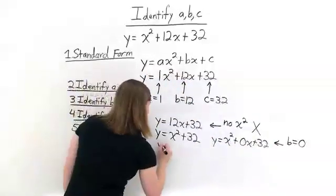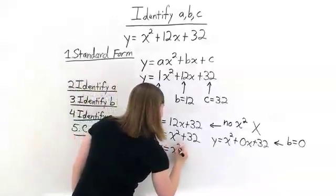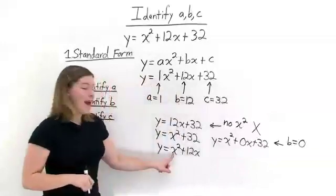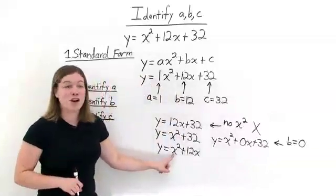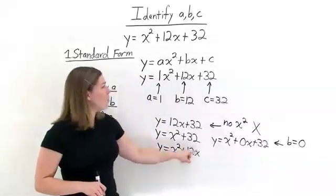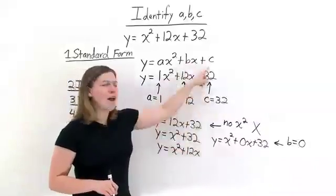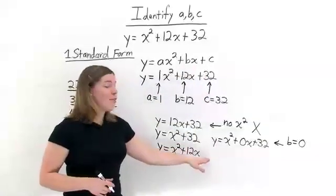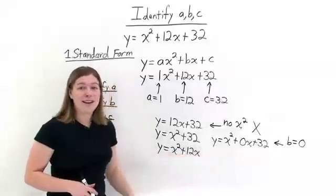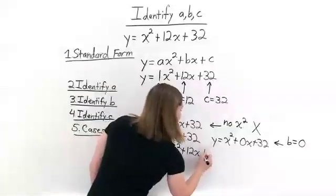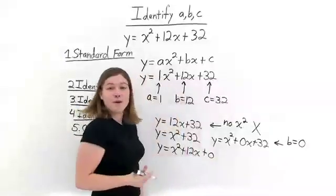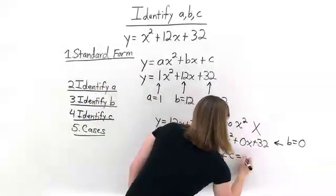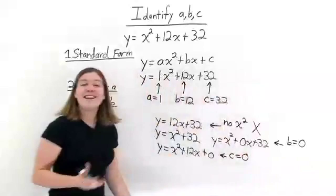Let's look at one more case: y is equal to x squared plus 12x. Here we have an x squared term, so we have a quadratic equation. We also have an x term, but we don't have a constant. Since there's nothing on the end, that's the same thing as adding 0. That means for this equation, c — our constant at the end — is equal to 0.